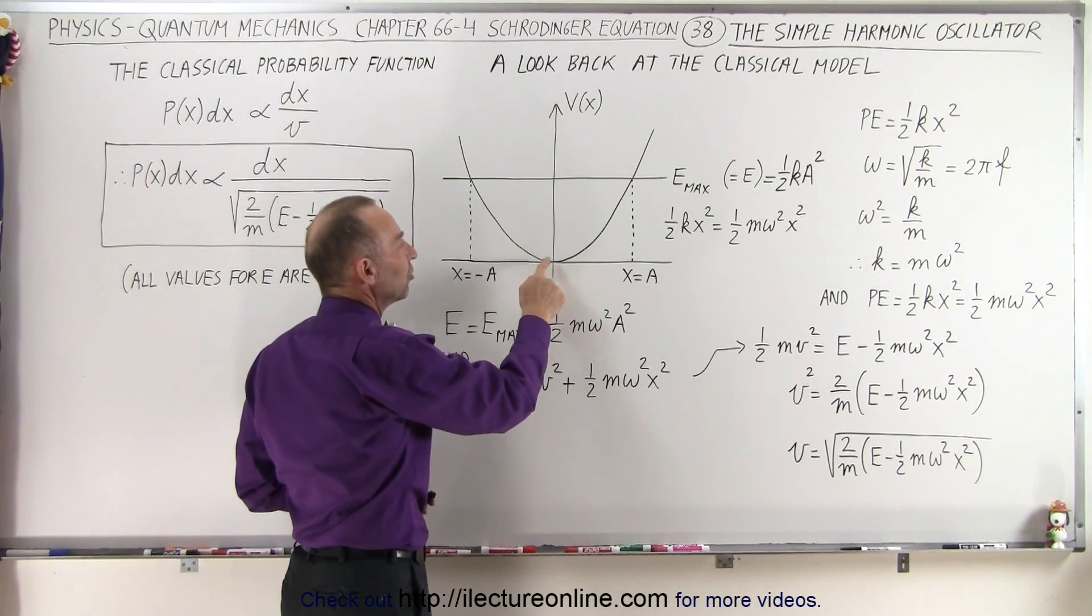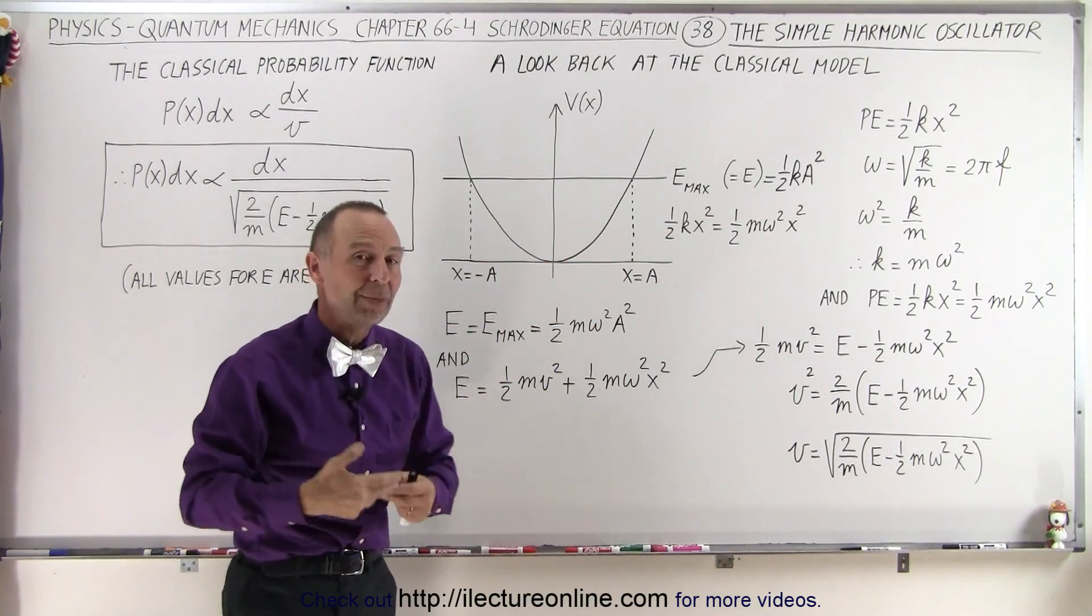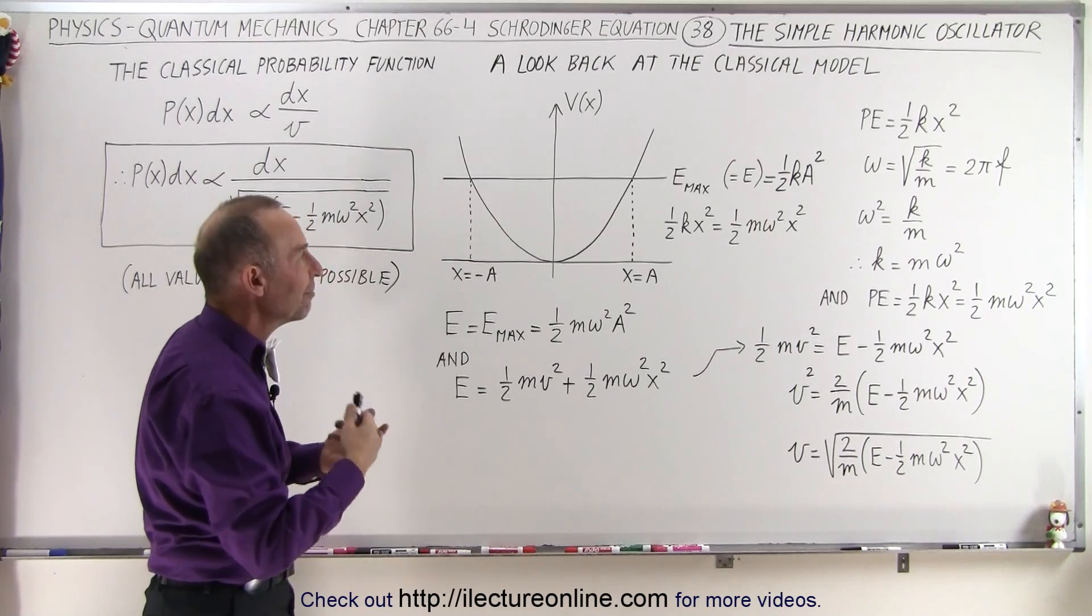At the very bottom, when the potential energy is zero, that's when we have the maximum kinetic energy, one-half mv squared.